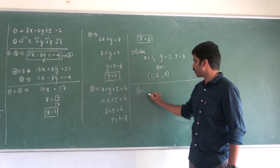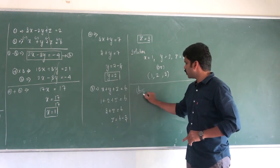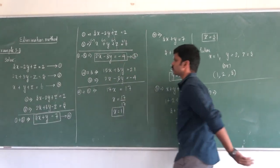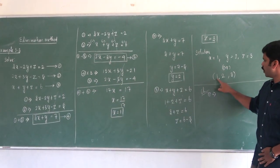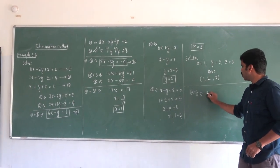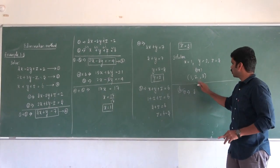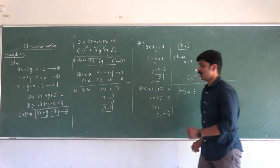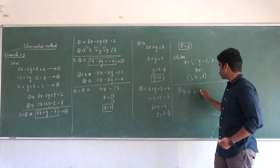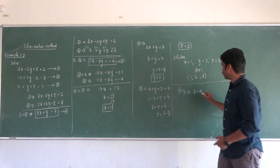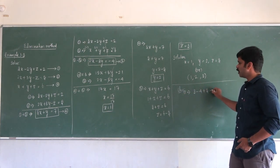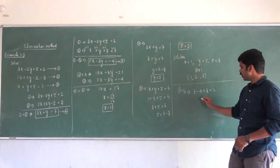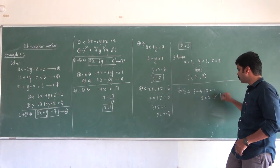Now I will check this. First equation: let me substitute 1, 2, and 3. You will get 3 into 1 is 3, minus 2 times 2 is minus 4, plus 3 equals 2. So 6 minus 4 is 2, equal to 2. It balances out. This solution satisfies all 3 equations.